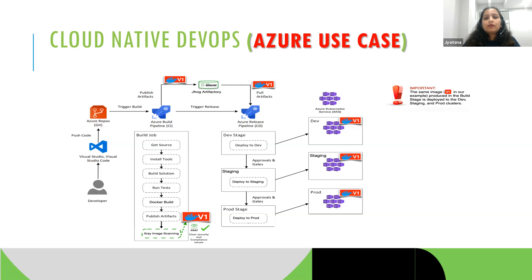The same image that is first pushed to the dev environment gets promoted through all environments, finally to production. That highlights that you have build integrity when making use of containerization technologies.